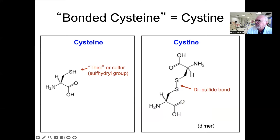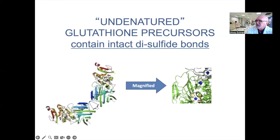So we can use the term 'bonded cysteine' in place of cystine. Note the disulfide bond between the two cysteines that forms cystine. Cystine requires an intact disulfide bond. Getting back to undenatured whey protein isolate: 'undenatured' means that the original three-dimensional shape of the protein is intact and appears as it would in its natural form. The protein is wound up like a ball of wool, allowing contact between individual strands to keep it in its natural shape or configuration. This allows the disulfide bonds to remain intact.